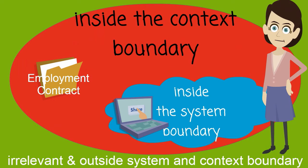Now let's look at defining the context boundary. The decision you have to make here is whether the aspect you're considering is within the context of the system or whether it is not relevant at all to the planned system. For example, in the human resources system example, the employment contracts are relevant to the human resources system and are therefore within the context boundary of the requirements efforts. However, if you consider the fact that the organization will be upgrading their printers at the same time as your project, you would place this outside the context boundary because it has no impact and is completely irrelevant to your requirements.